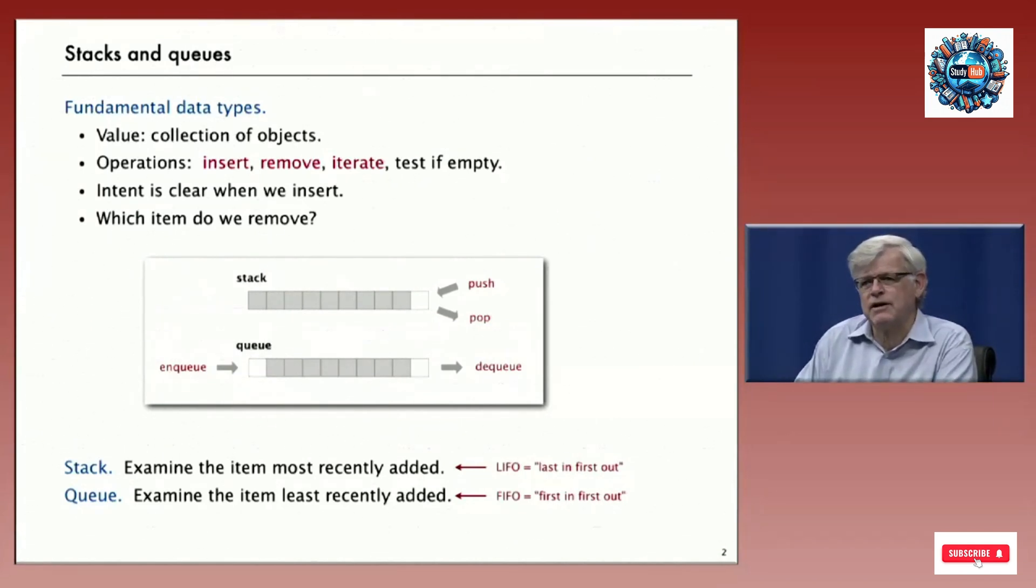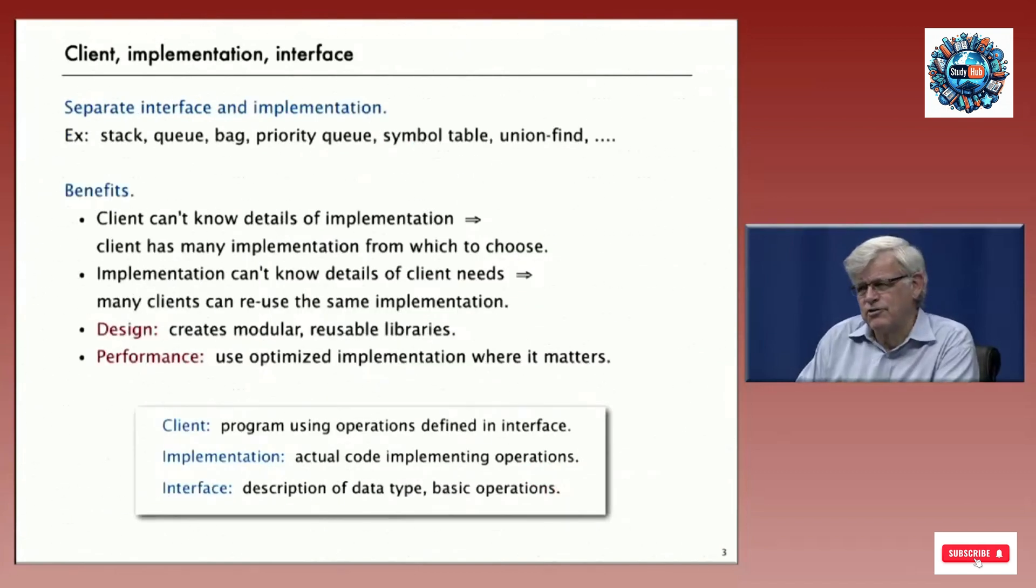Now we're going to look at how to implement these things. Our subtext today is all about modular programming, a discipline we're going to follow carefully throughout this course. The idea is to completely separate the interface and the implementation. When we have these types of data structures precisely defined, like stacks and queues, we want to completely separate the details of the implementation from the client. The client can have many different implementations from which to choose. The implementation can't know the details of the client needs.